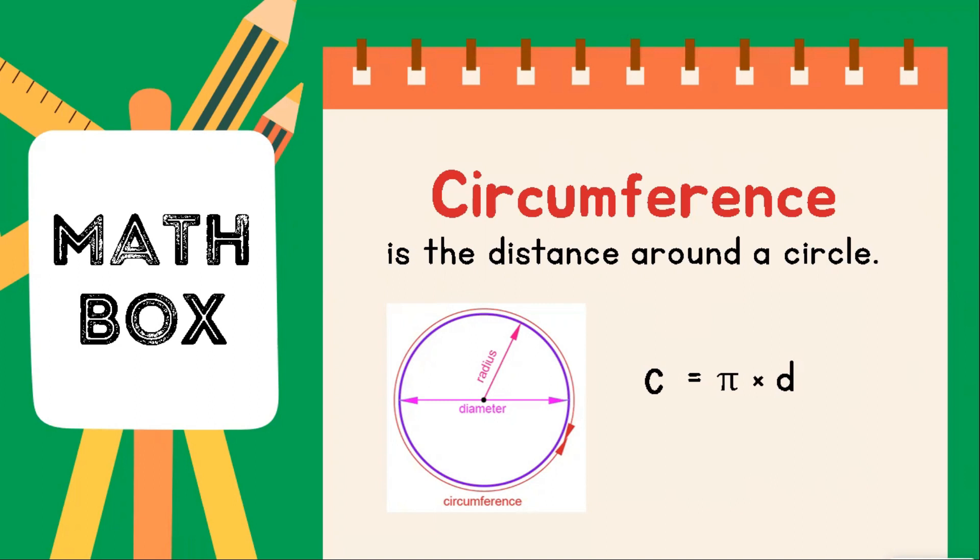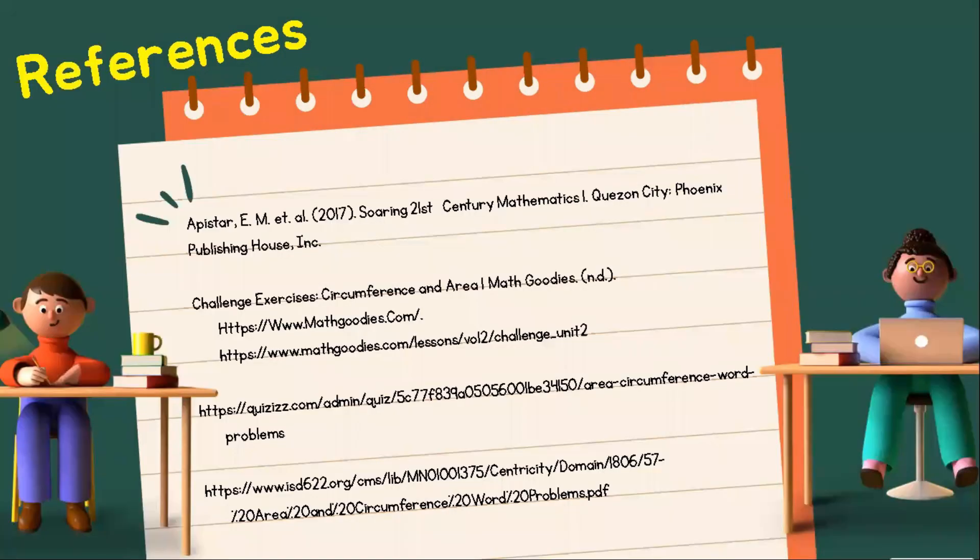Or, if the radius is provided, circumference of the circle will be 2 times pi times r, where r is the radius. Since diameter is equal to 2 times r.